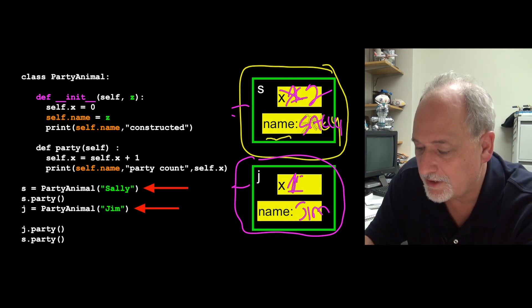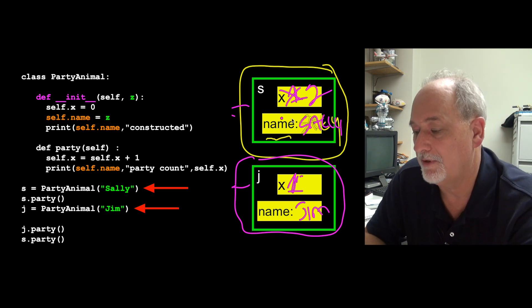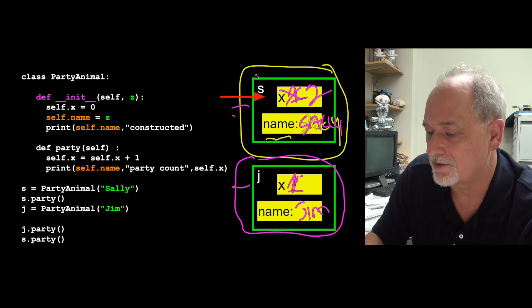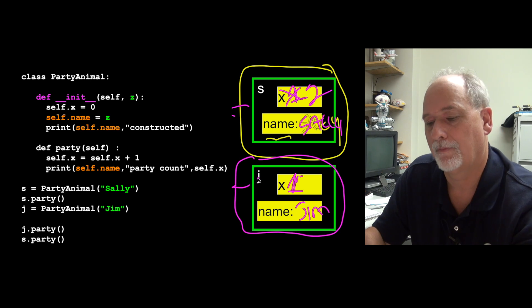But they're the variables, but the key is, is that every time we do a new construction, it duplicates this, and there's another copy of it. So there's an x within s, so s.x is this variable, and j.x is that variable.